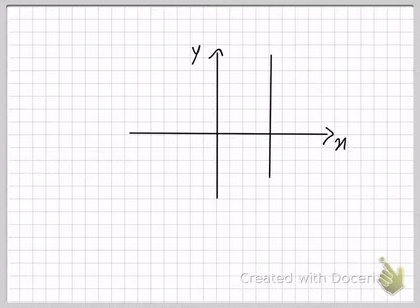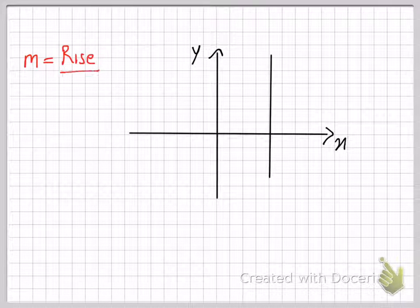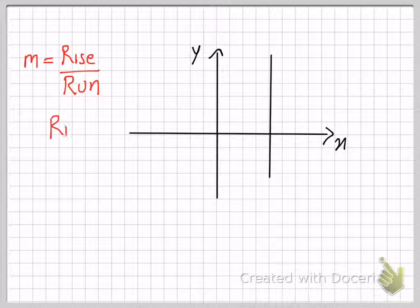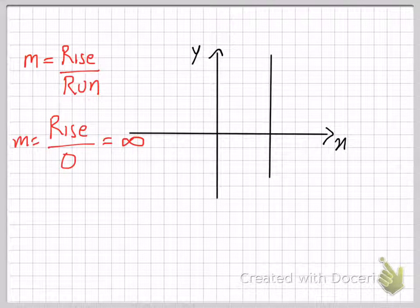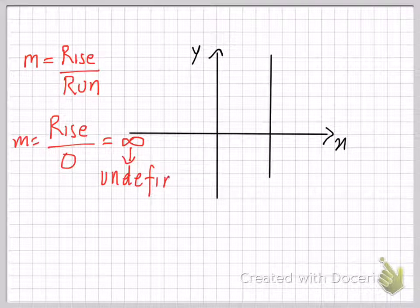A vertical line like this will have an undefined slope. Your slope is equal to rise over run — this line does rise, but it doesn't run, so the denominator will always stay 0. Anything divided by 0 is undefined, or more commonly referred to as infinity. Since infinity is not defined, instead of saying infinity you can also use the word undefined.